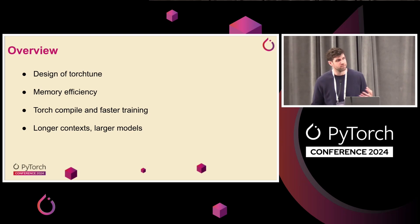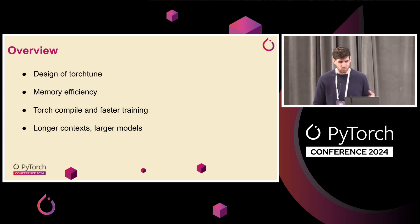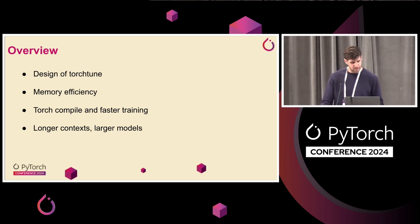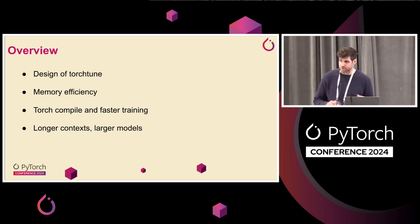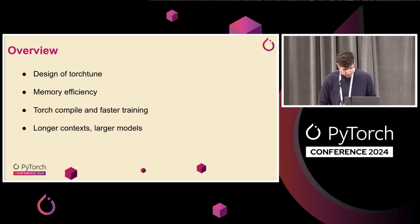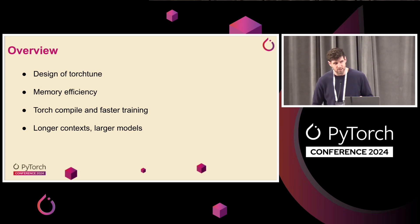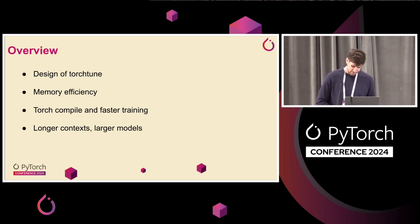Just a quick overview of what I'm going to go through. First, I'll talk about the design of TorchTune and why we chose to design things the way that we did. Then I'll do a bit of a case study on memory efficiency, some of the different levers that we can pull. Then I'll talk about training speed, Torch Compile, and some other things. And finally, we'll close out with long context and larger models.